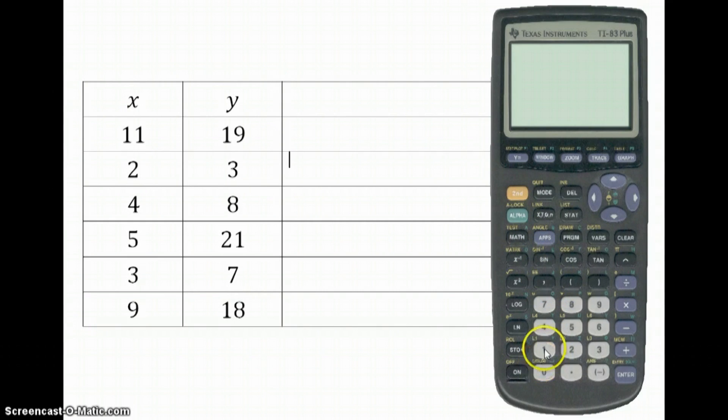So we're going to go into the catalogue. So press 2nd, then catalogue, so the 0. And then you're going to get a whole load of things. And you're going to want to keep going down. And it's a bit of a way for a moment. And then you get down to Diagnostic Off and Diagnostic On. You want Diagnostic On. So enter on that one. Press Enter. And it should come up with Done. That means it's sorted. You're ready. There is a reason why we do this, and I'll show you why.